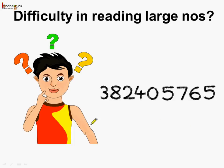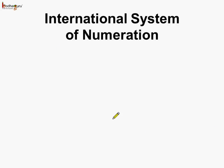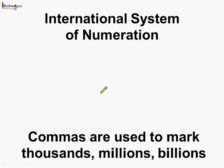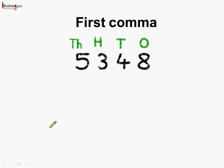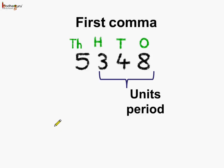We have difficulty reading large numbers — what is the solution? In the international system of numeration, we can put commas. Commas are used to mark thousands, millions, and billions, making it easy to read and write numbers. The ones, tens, and hundreds form the units period, and then comes the first comma, which marks thousands.